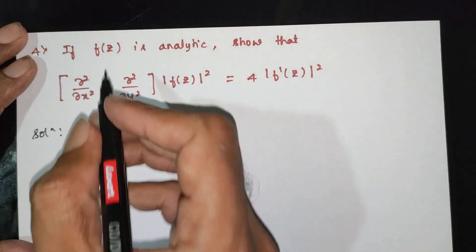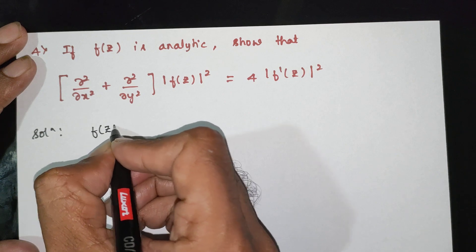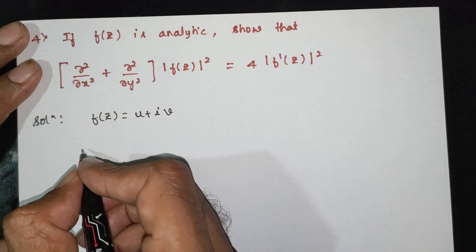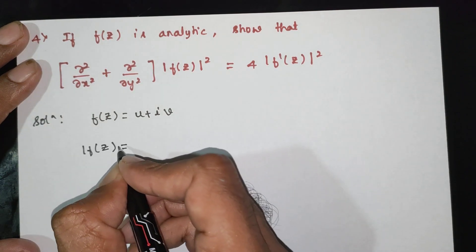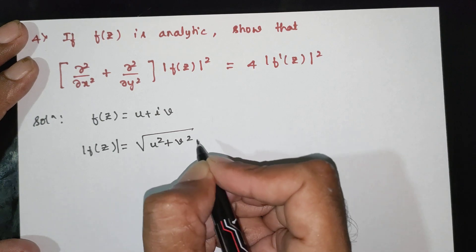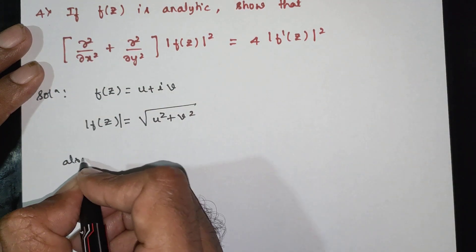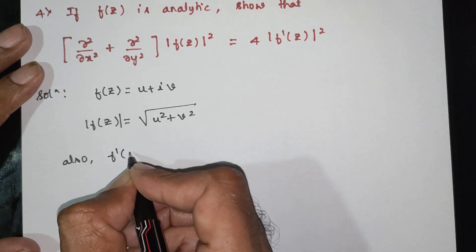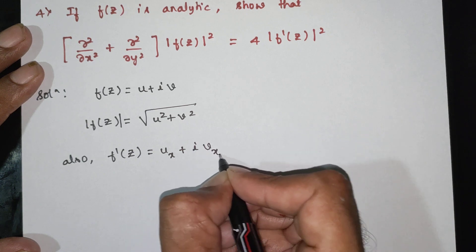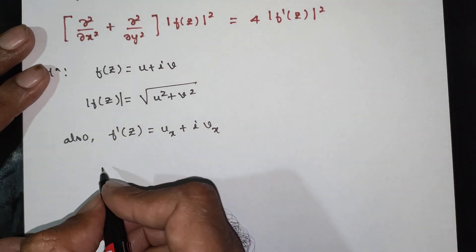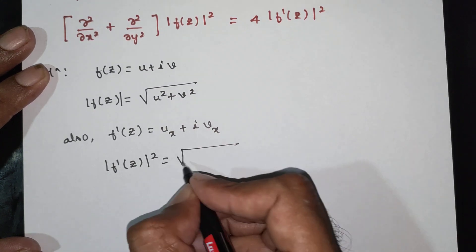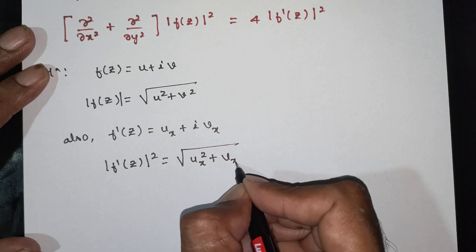Solution. First, let f(z) = u + iv. The modulus of f(z) is the square root of u² + v². Also, f'(z) = ux + i·vx, and the modulus of f'(z) is the square root of ux² + vx².